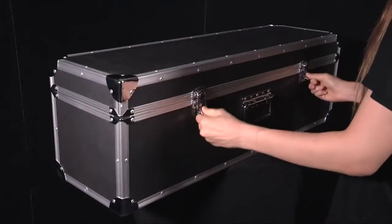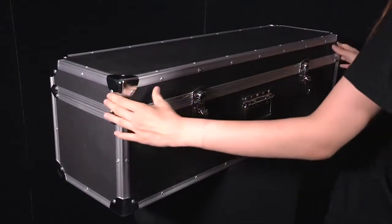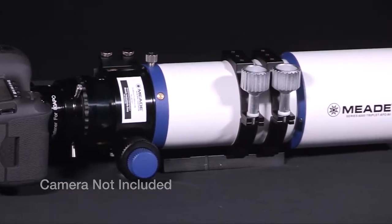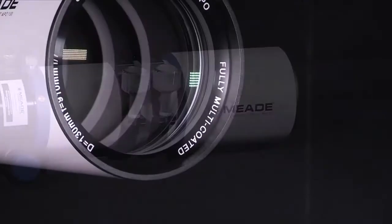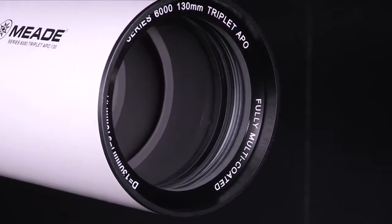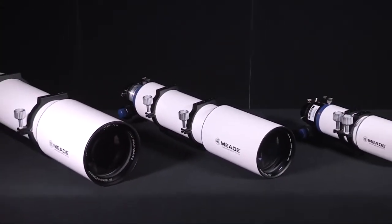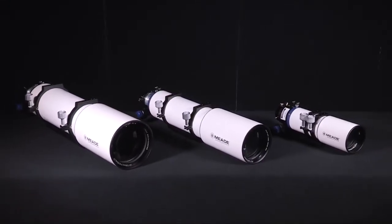These telescopes will fill the need of the most discerning astronomer. For crisp wide-field observing and imaging, nothing can beat a true three-element apochromatic refractor. Meade's Series 6000 Triplet APOs are among the finest available optically at any price.